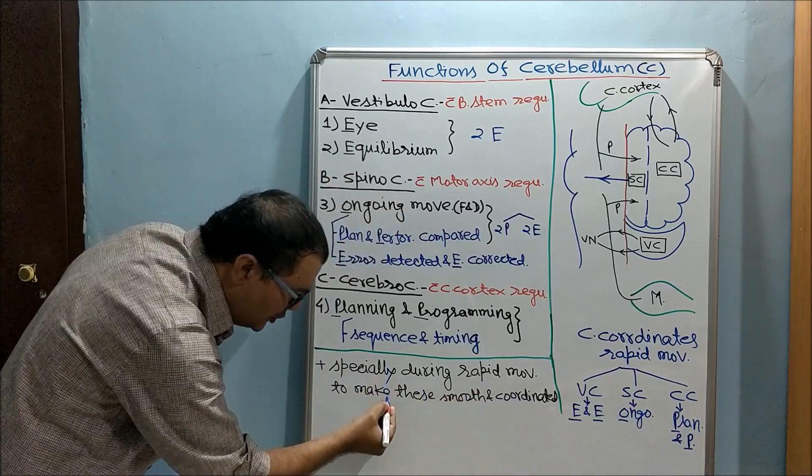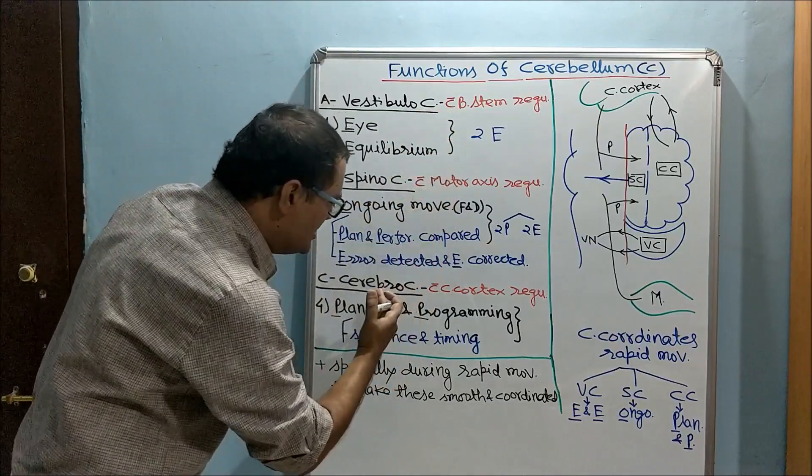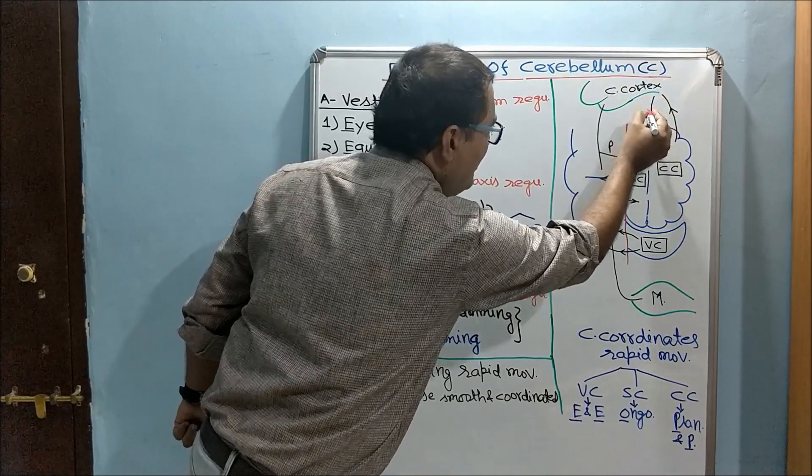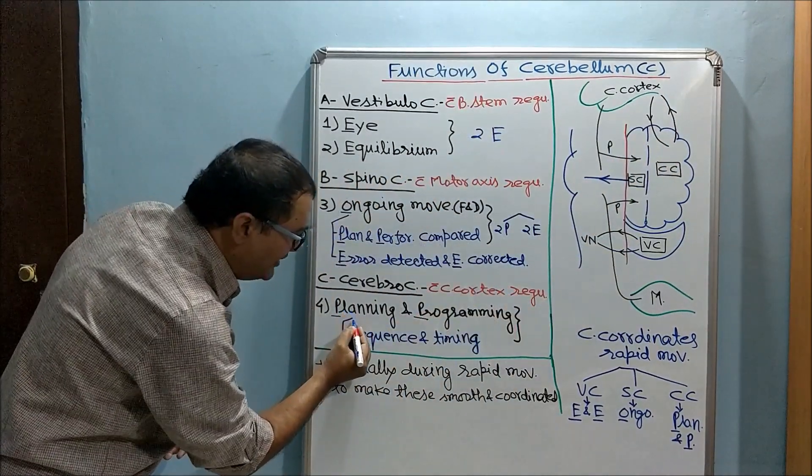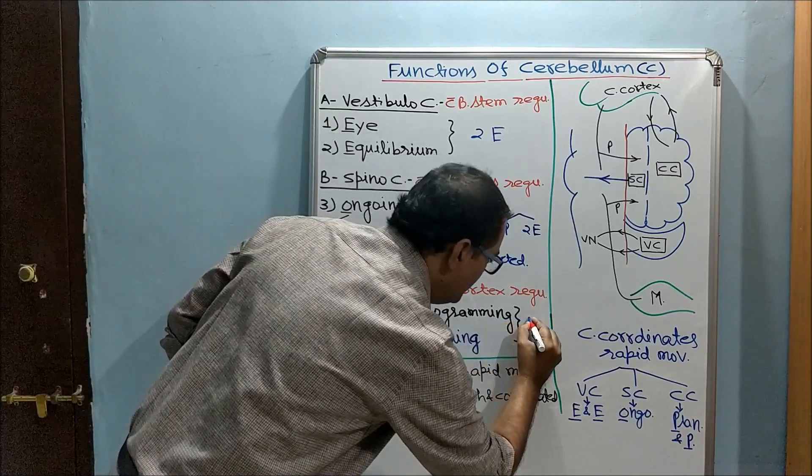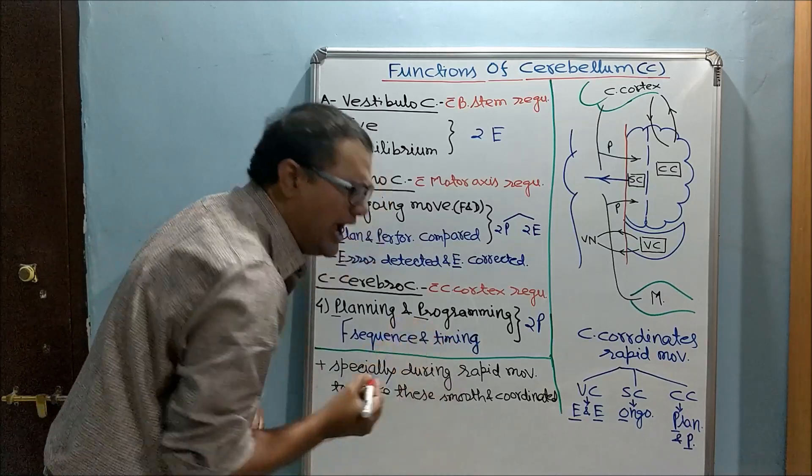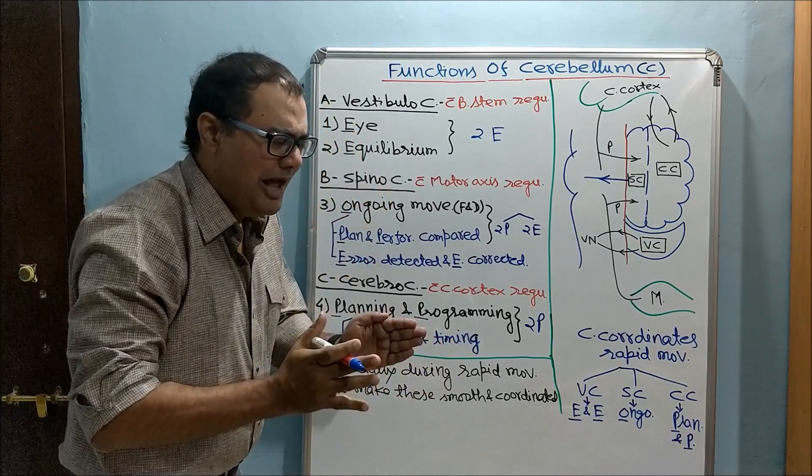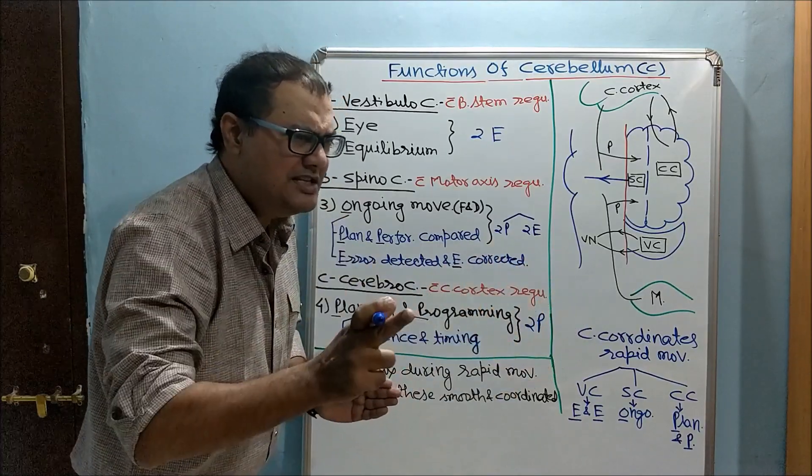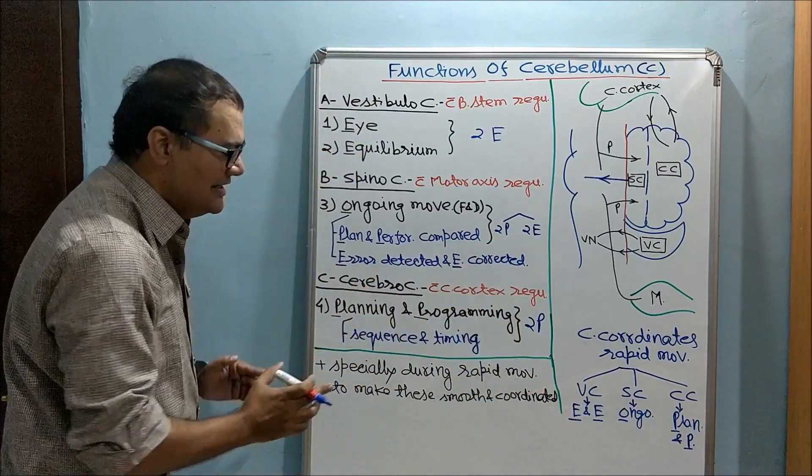Let's come to cerebrocerebellum now, which works with cerebral cortex and regulates planning and programming of rapid motor activities. We can remember by two P's: planning and programming, especially for sequence and timing. For example, the plan is to run and after some time turning to left. So at the right time, turn left - sequence, direction, and timing. This is the function of cerebrocerebellum.